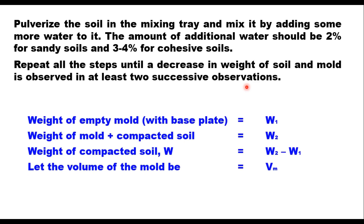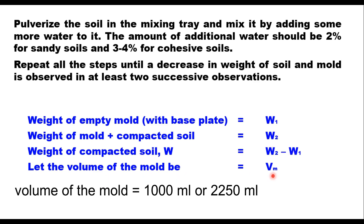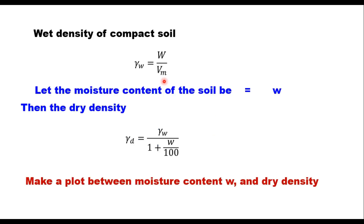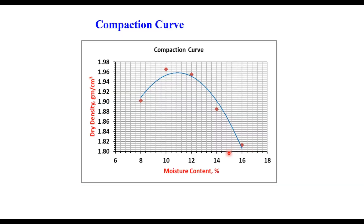Let the weight of the empty mold be W1 and the weight of the mold plus compacted soil be W2. Then the weight of compacted soil in the mold is W2 minus W1. If the volume of the mold is Vm, you can determine the wet density as W/Vm. If w is the moisture content, the dry density equals wet density divided by (1 + w/100). Make a table of moisture content and dry density, then plot a compaction curve with moisture content on the x-axis and dry density on the y-axis.